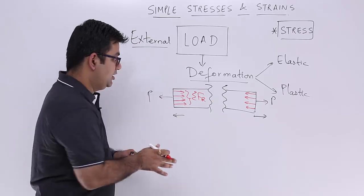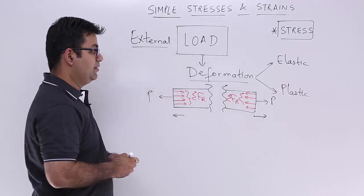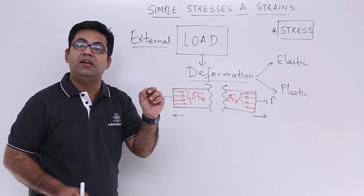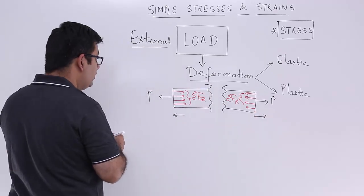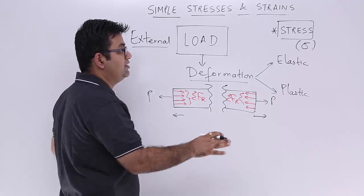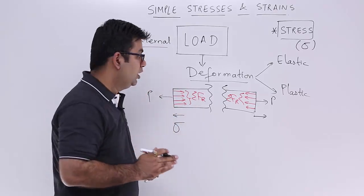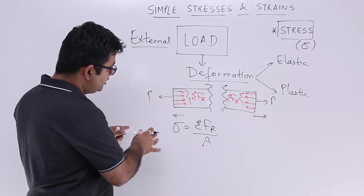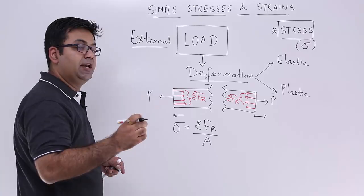If I take the summation of all these elementary forces, I get Σfr — the sum of the internal resistance forces. Similarly, on the other side I also have Σfr. So Σfr is the summation of the small elementary resistance forces produced by the material fibers against these external loads. The mathematical formula for stress, which I denote by the Greek letter sigma, is: sigma equals this resistance force per unit cross section, so sigma = Σfr / A.